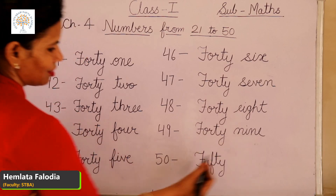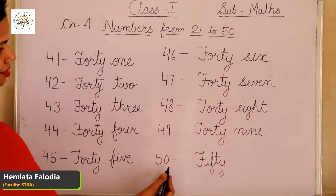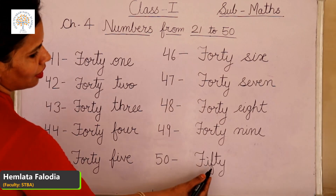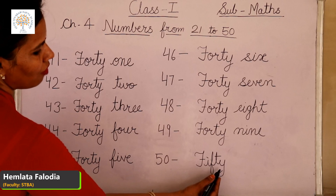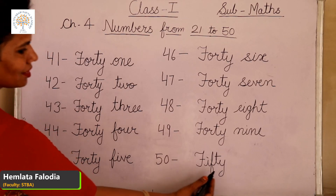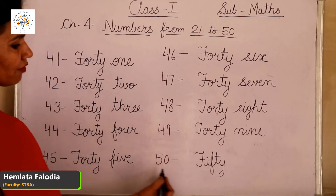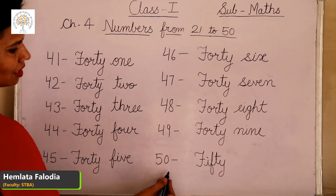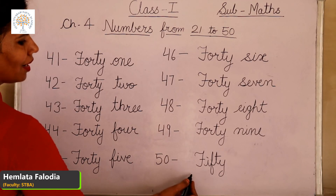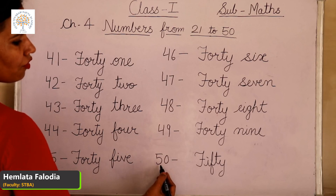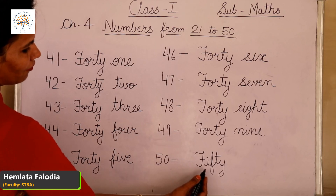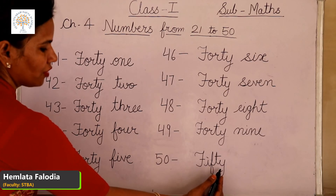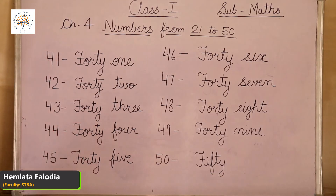Last but not the least, 50. F-I-F-T-Y, 50. Repeat with me: it means 5 times 10. 10 plus 10 plus 10 plus 10 plus 10 is equal to 50. F-I-F-T-Y, 50.